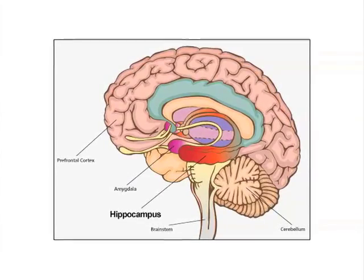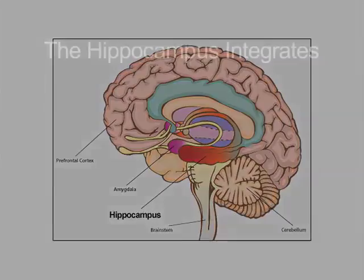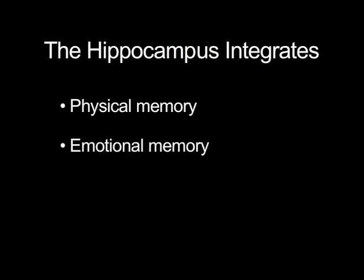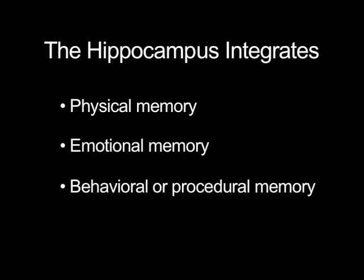The hippocampus is literally integrating lots of different layers of memory: bodily memory, emotional memory, behavioral memory called procedural memory, as well as perceptual memory, along with mental models and schema that are developed.